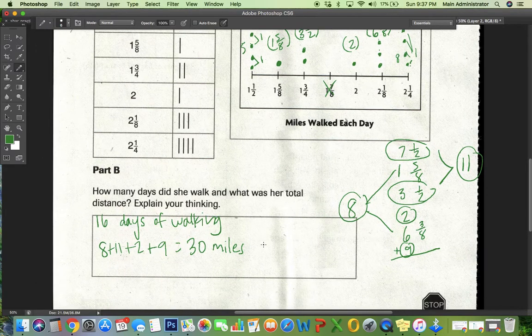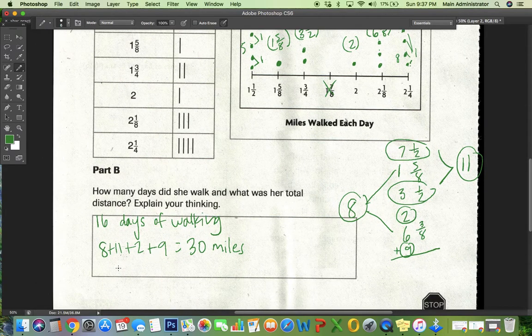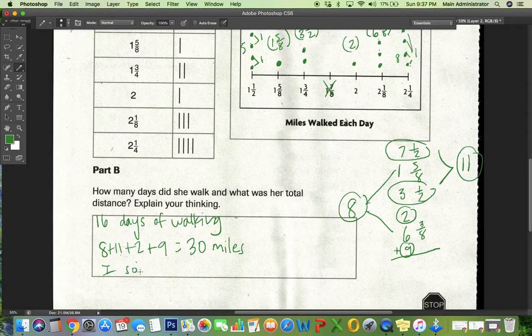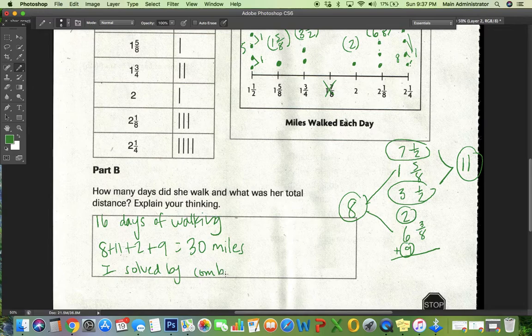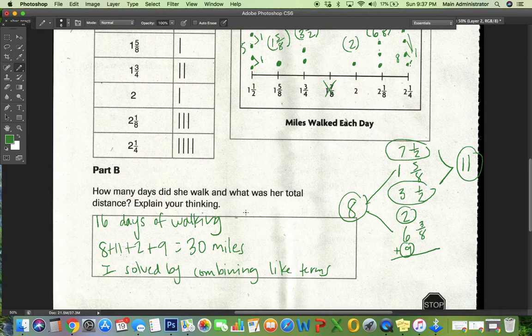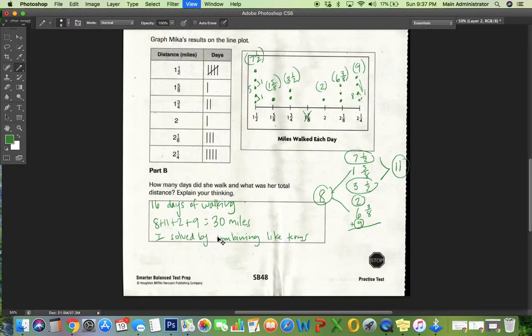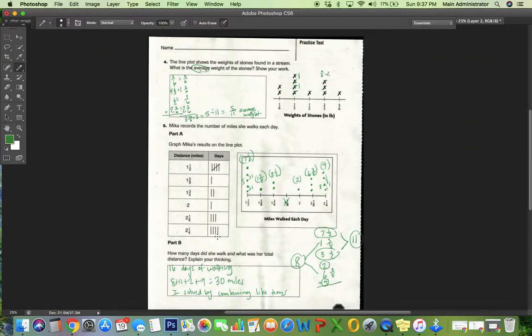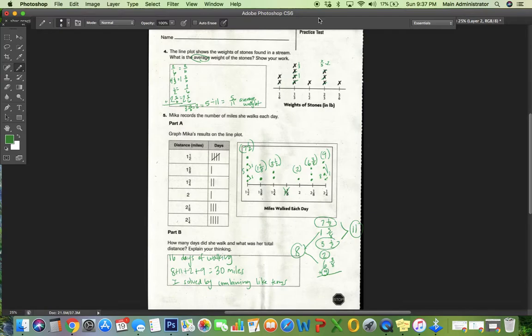And I solved, so it says explain your thinking. I solved by combining like terms. So I put the fractions together that had the same denominator so I could add them easily. And I've got 16 days and 30 miles. So I'm done with SB 48. There we go.